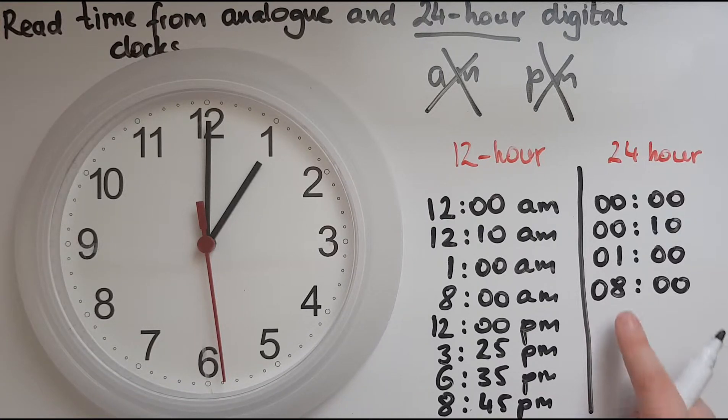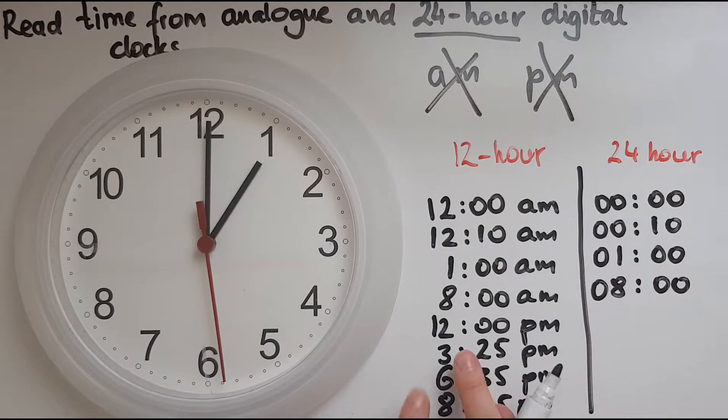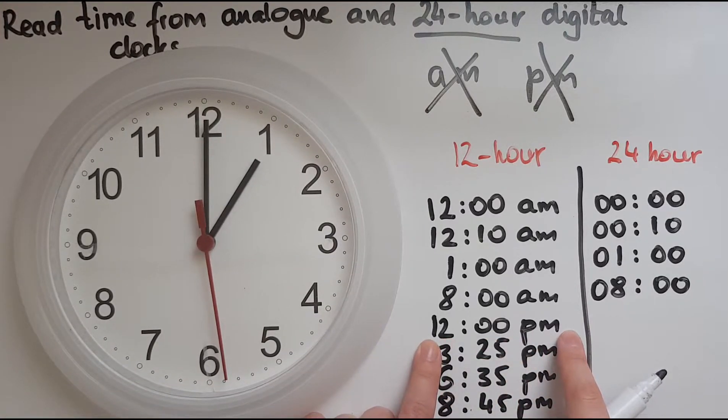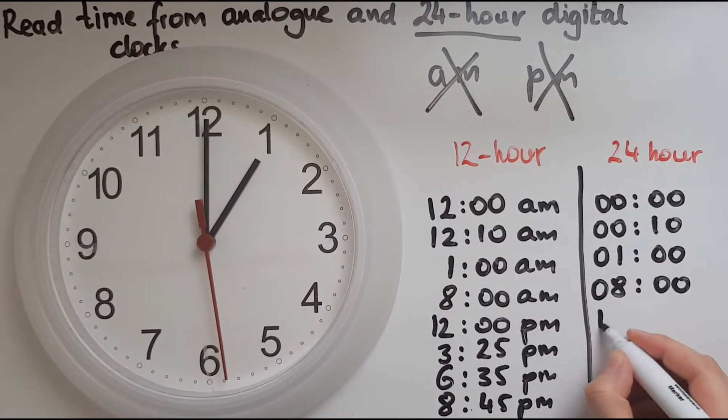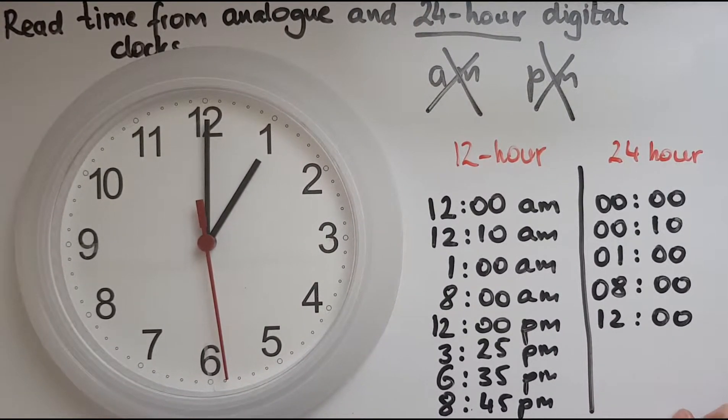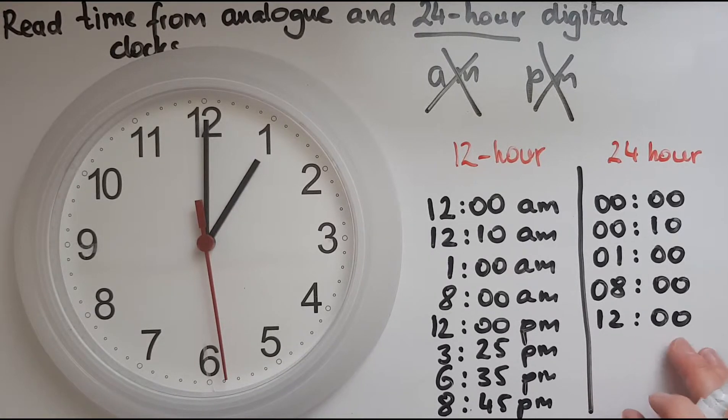Because 8 in the evening will be shown slightly different with a bigger number at the front. So then we've got 12 p.m., which is 12 p.m. midday. How do we show that in the 24-hour clock? 12:00, because there is only one 12:00 and that's 12 p.m. midday.